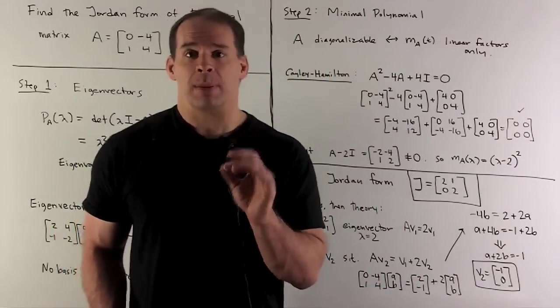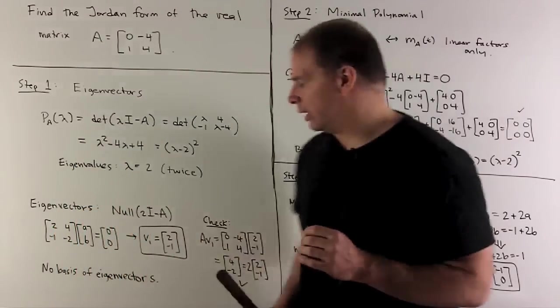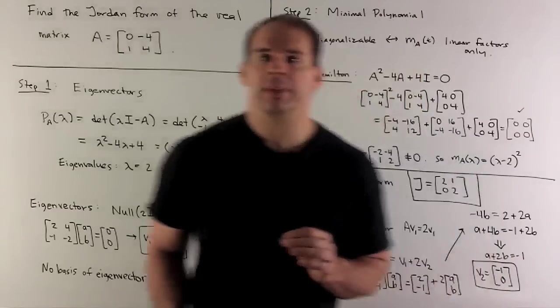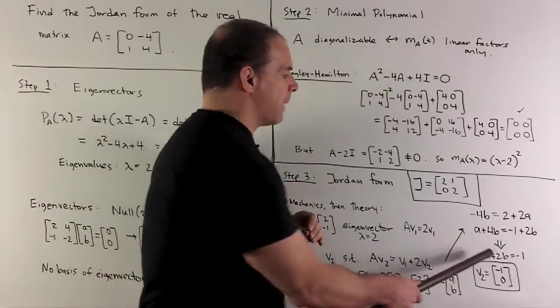So, our basis that puts us in Jordan form is going to be V1 = [2, -1], V2 = [-1, 0].